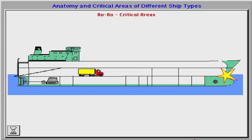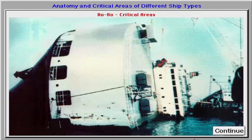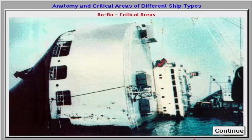The most dangerous situation is water on the ro-ro deck. This may cause rapid capsizing due to the effect of free liquid surface. That is why the tightness of the doors leading to the ro-ro deck is vital. In case of a collision, water may enter the ro-ro deck. In order to avoid spread of water to the whole deck, transverse bulkheads may be required in addition to those of conventional designs.